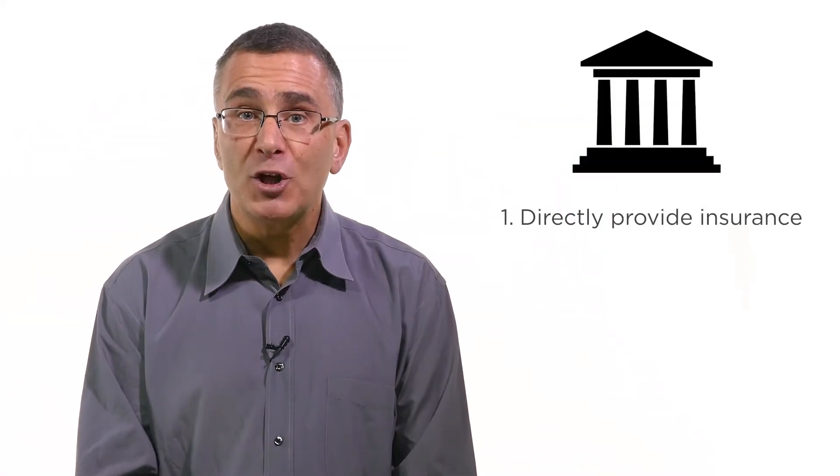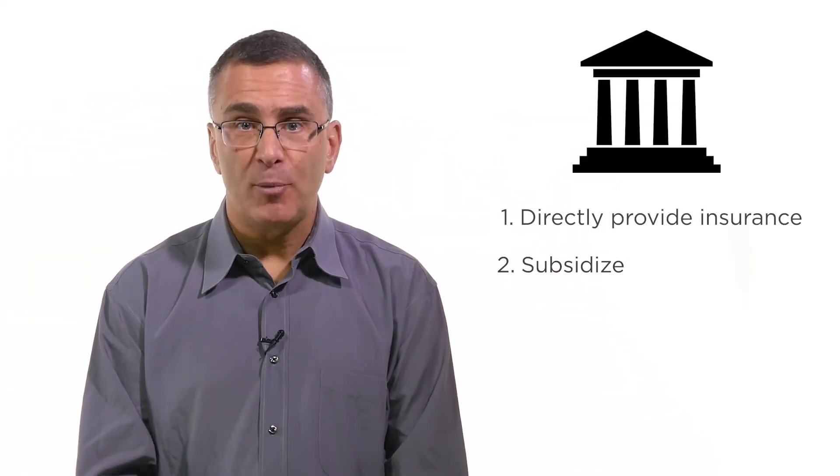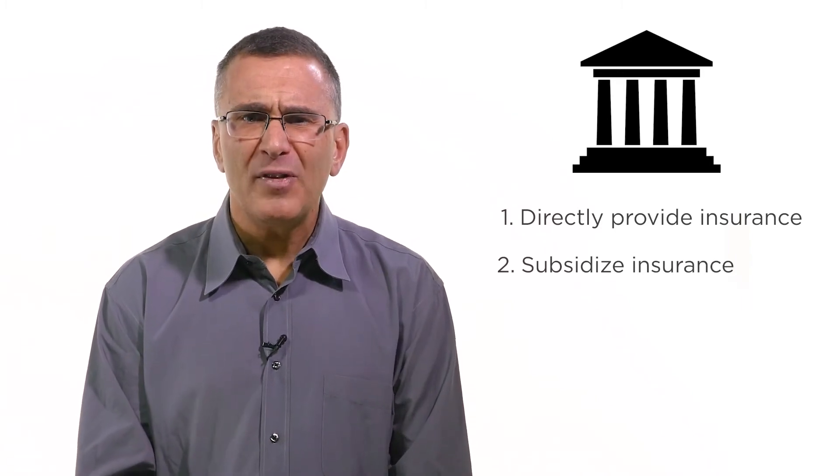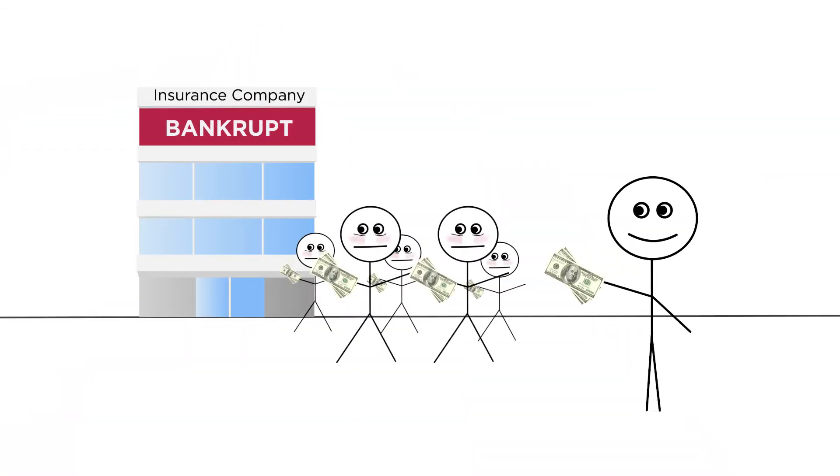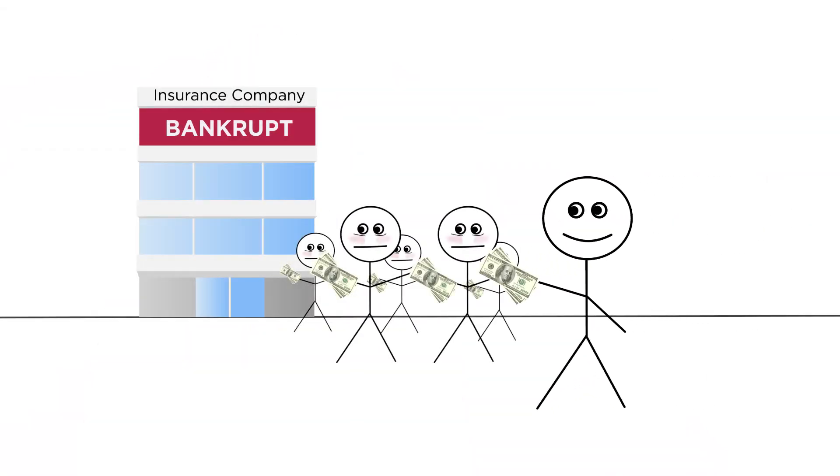What else can the government do? It can subsidize the purchase of insurance. You can sort of think of informational asymmetry as a problem with a positive externality. If I get the healthy guy to buy insurance, then it allows the market to exist. Because the healthy guy buys insurance and doesn't end up needing to use it much, that allows the insurance companies to spend the necessary money on those who get sick.